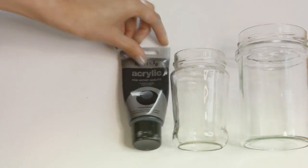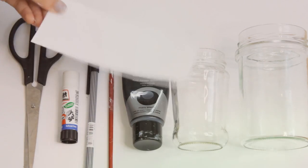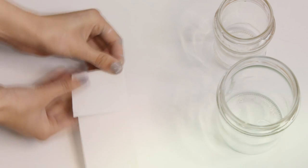what you're going to need is some jars, acrylic paint, a paintbrush, a pen, some print stick, and some scissors and also some paper. So the first thing I'm doing is folding the paper